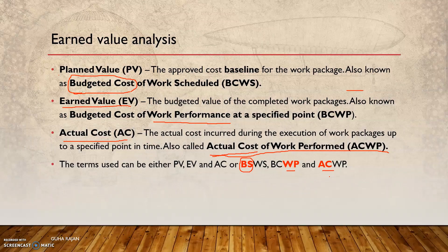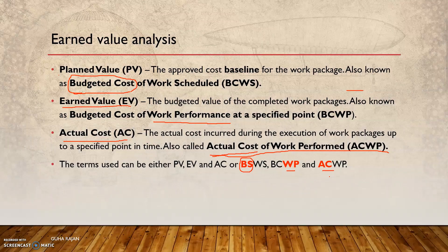These are the key formulas in earned value analysis: Schedule Variance (SV), Cost Variance (CV), Schedule Performance Index (SPI), Cost Performance Index (CPI), and finally the To-Complete Performance Index (TCPI).